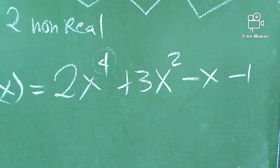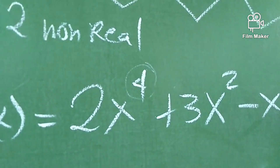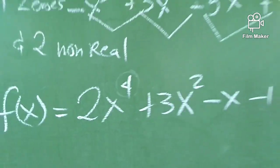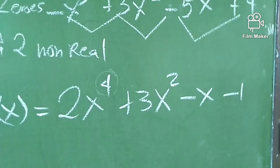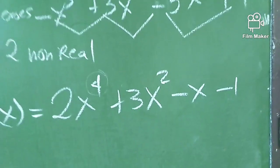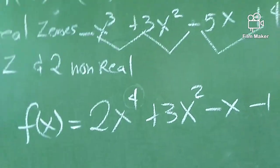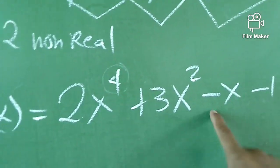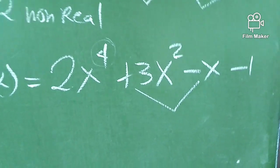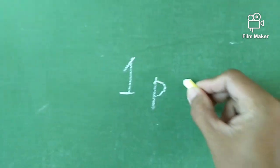The polynomial is 2x⁴ + 3x² - x - 1. We don't need to worry if there's no x³ term. The main focus of the Descartes Rule of Signs is on adjacent terms, so we must arrange in standard or descending form of exponents. Positive, positive — no change. Positive, negative — that's one change. Negative, negative — no change. So we have one positive real zero.